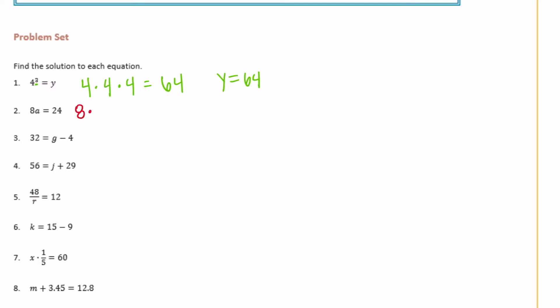So 8 times what is equal to 24? Well, 8 times 3 is equal to 24, so that means that a must equal 3. Number 3: 32 is equal to g minus 4.